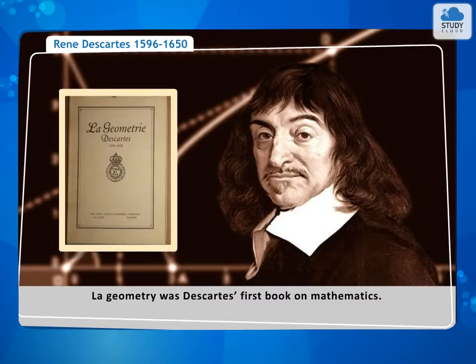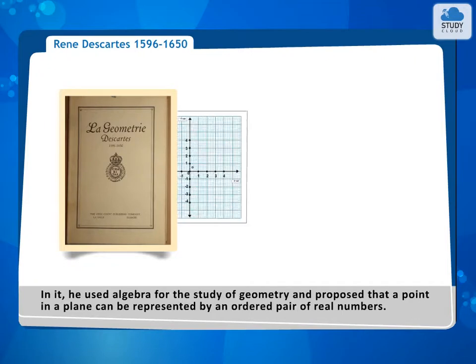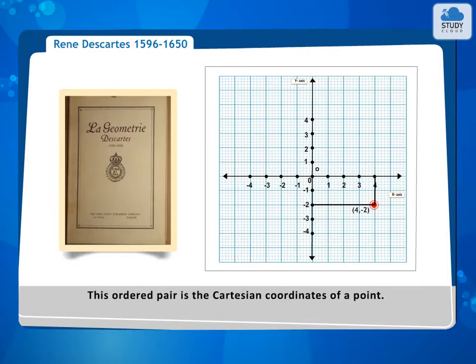La Géométrie was Descartes' first book on mathematics. In it, he used algebra for the study of geometry and proposed that a point in a plane can be represented by an ordered pair of real numbers. This ordered pair is the Cartesian coordinates of a point.